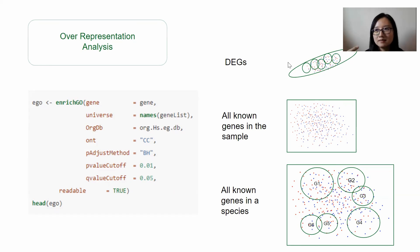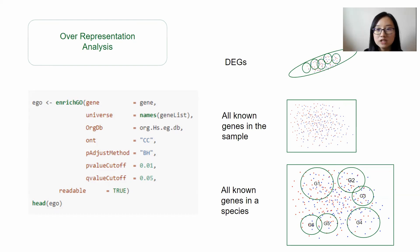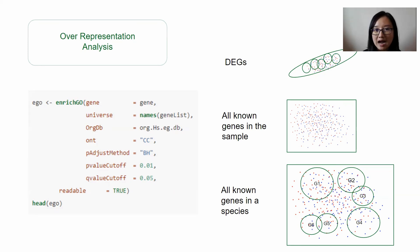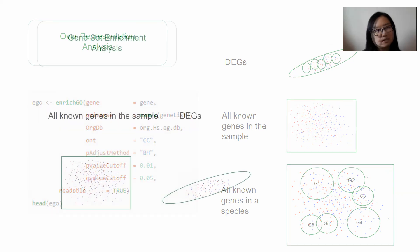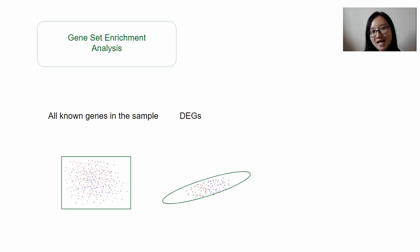For some people they will say DEG with a log2 fold change value more than one, or more than two, or with a p-value lower than 0.05. In this way, we will kind of ignore other genes that might have smaller changes but with significant effect. That's why there is something called gene set enrichment analysis.